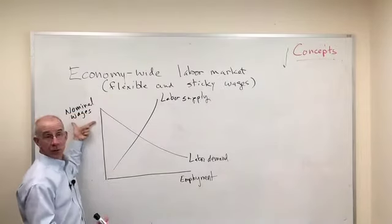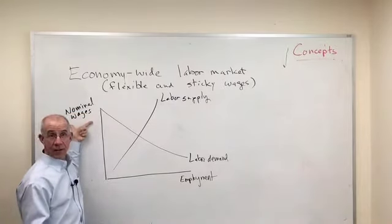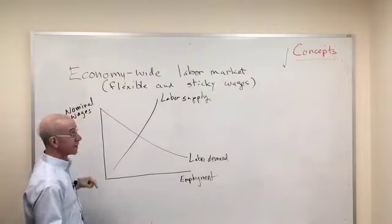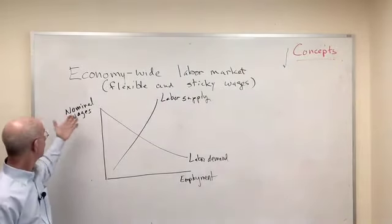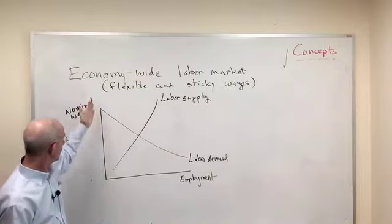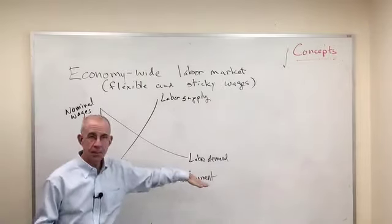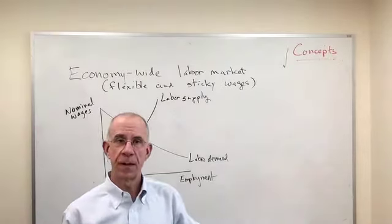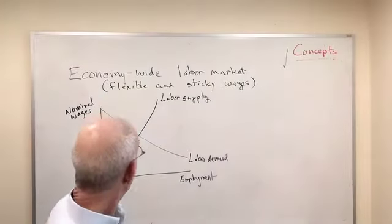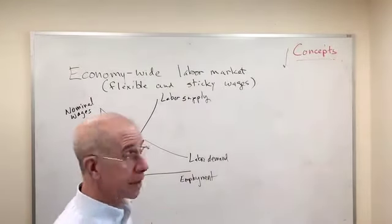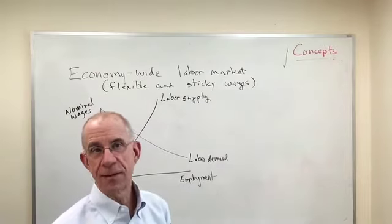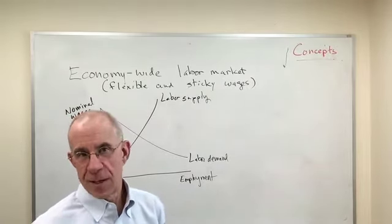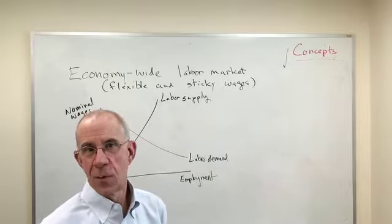I've got the price of labor — the nominal wages — and I'll talk about the nominal part in just a minute. We've got nominal wages, the price of labor, on this axis. We've got employment, economy-wide employment, on the horizontal axis. We've got labor supply, and we've got labor demand. Not surprisingly, if the wage goes up, this is saying that people will want to work more.